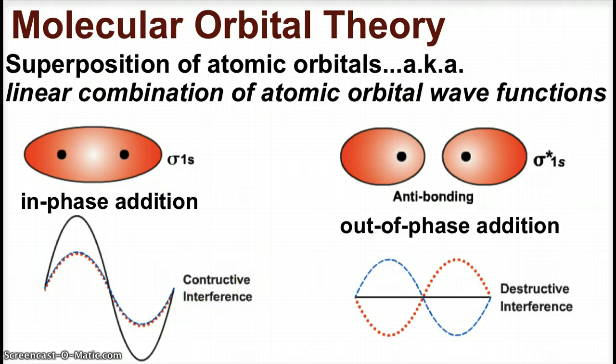Our waves can combine constructively or destructively, and that's what can happen with our orbitals since our orbitals are solutions to these wave functions. When orbitals combine in phase, we create bonding orbitals. When they combine out of phase, we have antibonding.